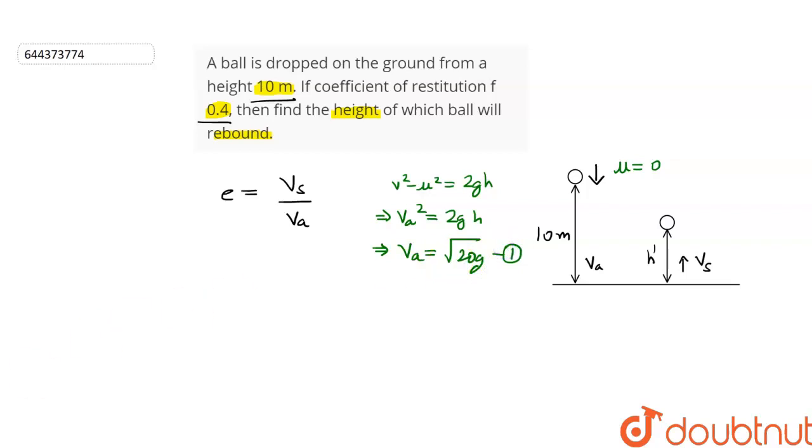Let this be the first equation. When the ball separates from the ground, it has some initial velocity, which is equal to VS. And when it reaches the maximum height, the final velocity V is equal to 0. So, again using the same formula,